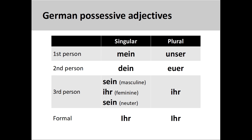Possessive adjectives in German are organized by person, case, gender, and number. The adjective roots, which you see here, always stay the same and refer to the person who possesses the object. The endings you put on these roots, however, change to indicate the case, gender, and number of the noun that follows. Let's walk through this concept step by step so that you can understand it better.